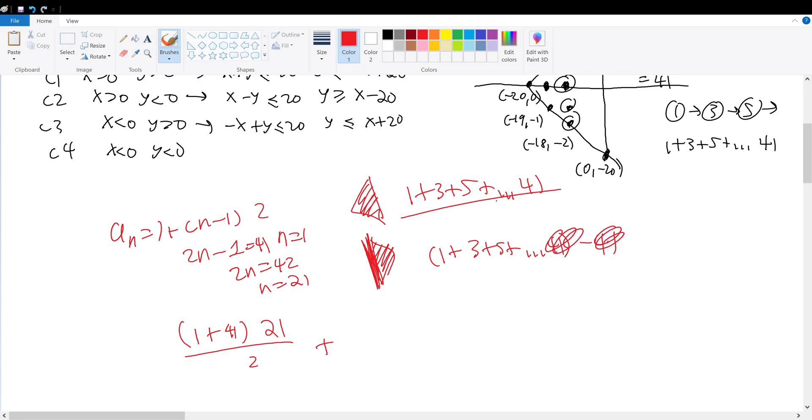Well, 41 and 41 cancel. So in other words, I have 1 + 3 + 5 + all the way up to 39. How was the sum of this series? Well, that is (1 + 39) times something divided by 2. What is that something? Well, 2n - 1 = 39. So n must be equal to 20. If n = 20, this goes here, and we are done.